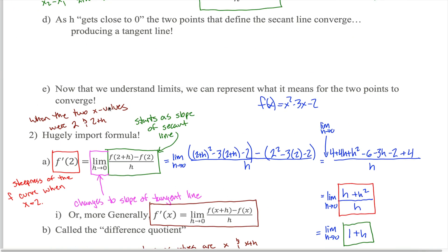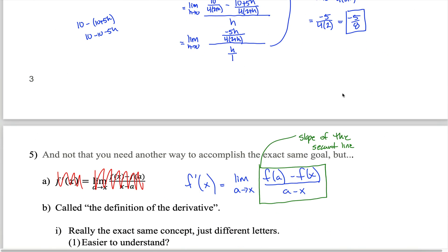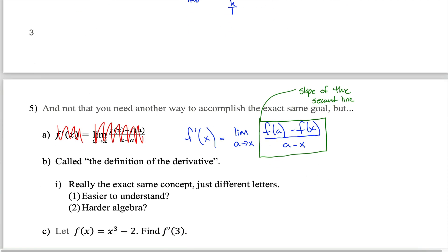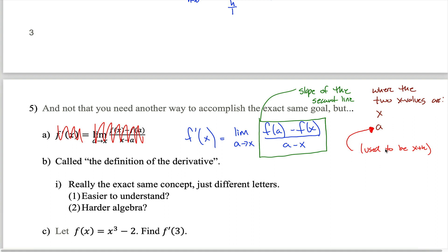The difference is that up above, the two x values defining the secant line were 2 and 2 plus h. Down here, the two values defining the secant line are x and then a. I'm switching the other point from x plus h to just a — I'm not defining the second point in terms of the first point; I'm defining the second point all by itself.